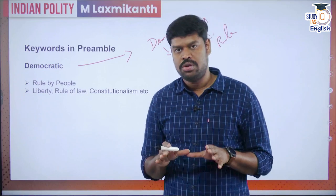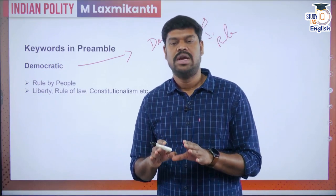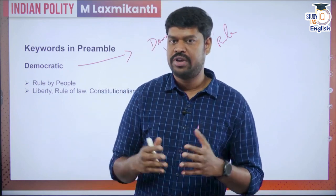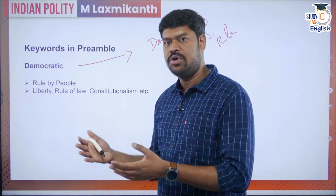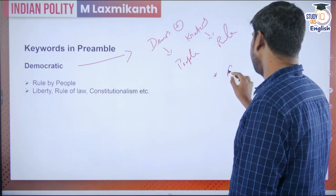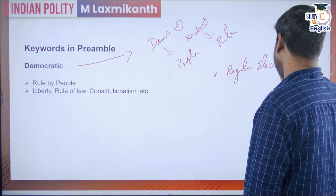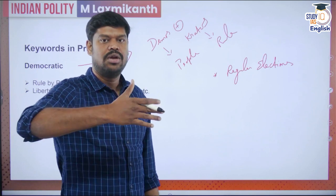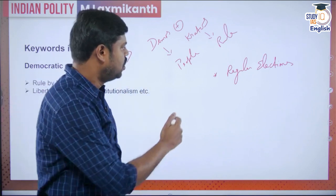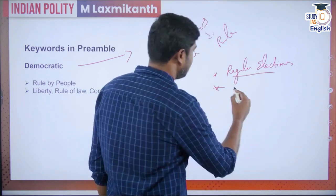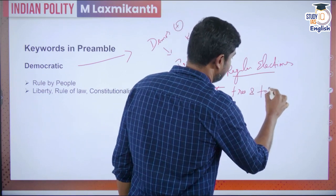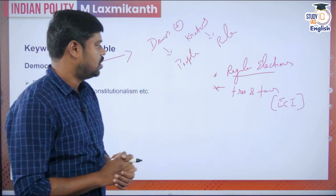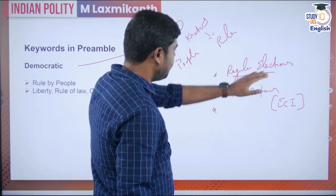In a country with democracy, certain characteristics are present. There will be regular elections — in India the Constitution says every five years there shall be elections to the Lok Sabha and also to the various legislative assemblies. We also have free and fair elections conducted by an independent body, the Election Commission of India, to ensure a free and fair election without any malpractice in the electoral process. We also have universal adult suffrage — every adult individual shall have the right to vote.